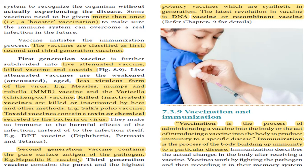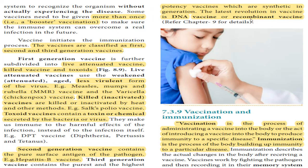Second generation vaccines are surface antigen vaccines — some viruses produce proteins called surface antigens that are used as a vaccine. Third generation vaccines are powerful, potential vaccines formed using DNA recombinant technology. We will discuss in chapter 9 how recombinant vaccines are produced.